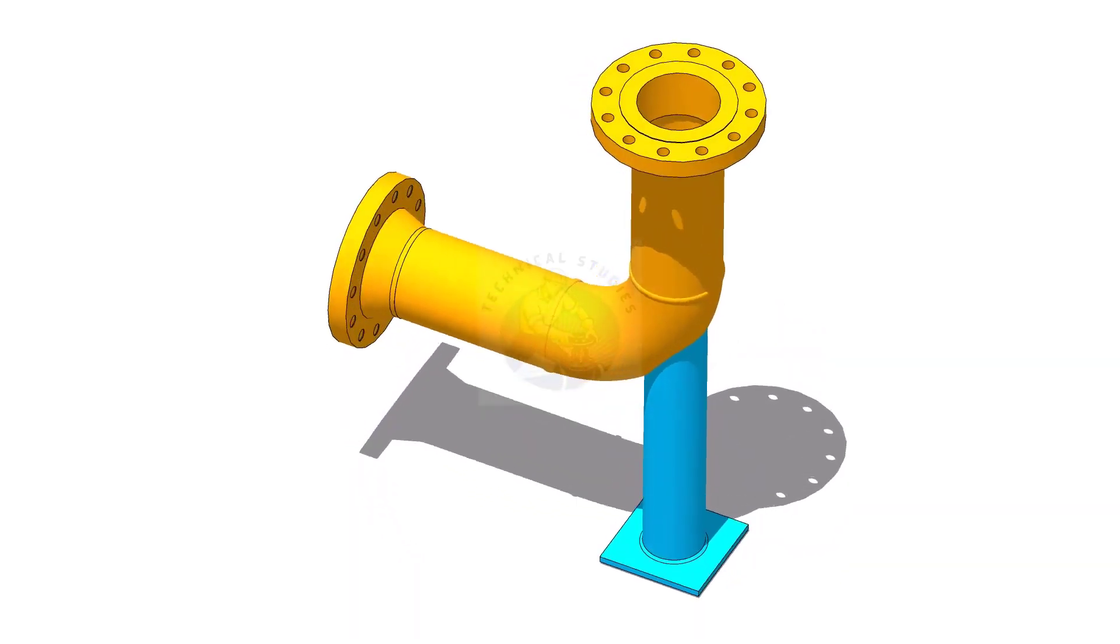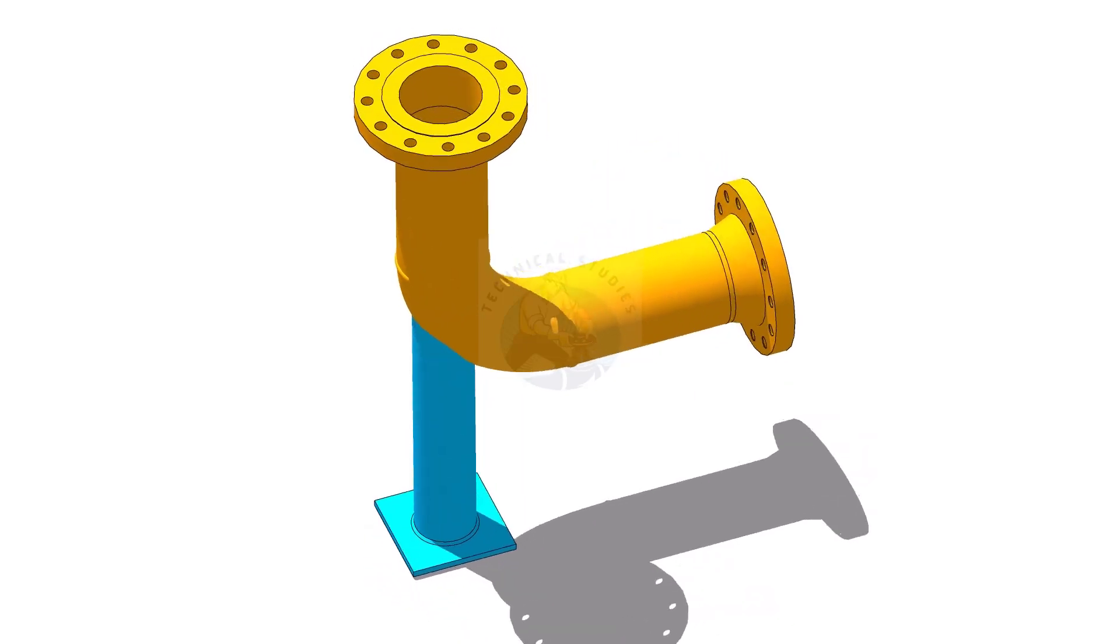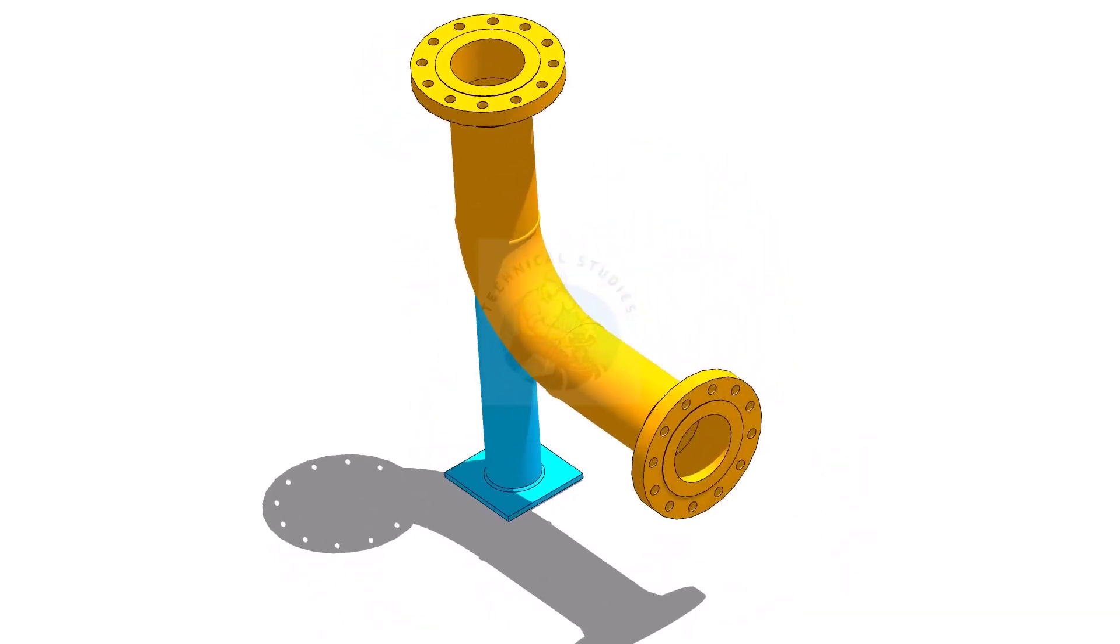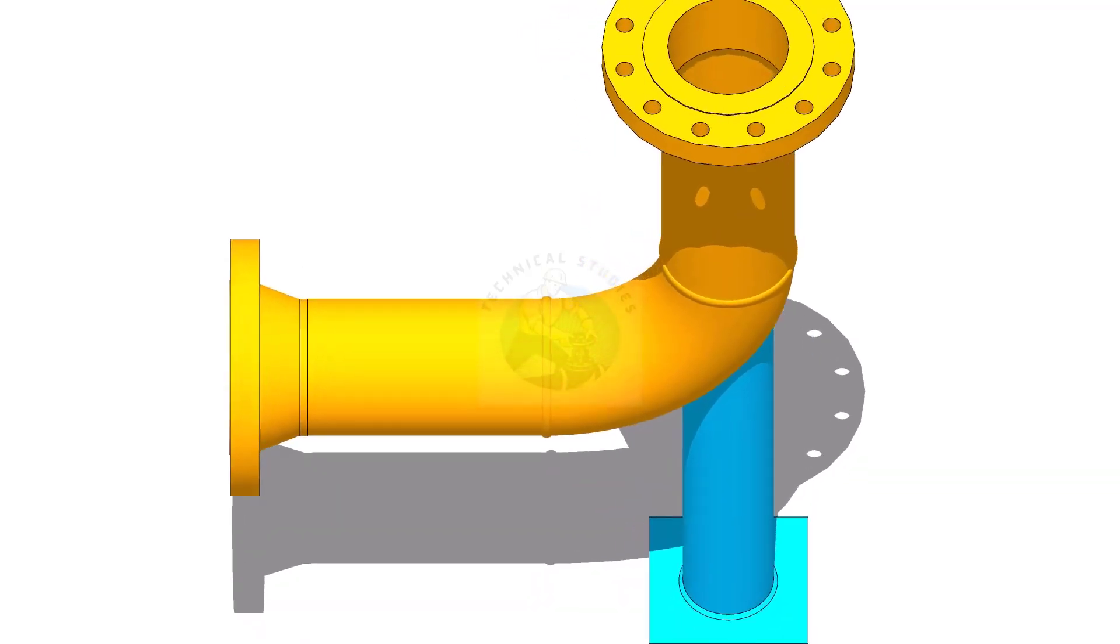A trunnion pipe support is a type of pipe support used to reinforce and stabilize piping systems. In this video I will show you how to lay out a trunnion support. Please subscribe, like and comment.